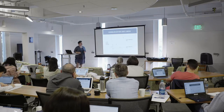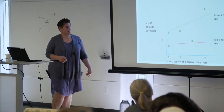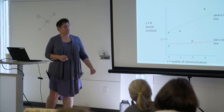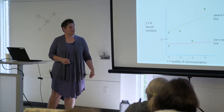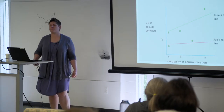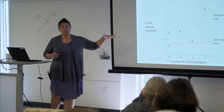Here's an example with Jane and Joe. You can see the random intercept difference — Joe has less sex on average, Jane has more. But what this is telling us is that in Joe's network, the quality of communication has no impact on how much sex he's having. For Jane, the quality of communication matters a lot for how much sex she's having with her partners. So we shouldn't constrain these lines to be parallel — we shouldn't constrain the slopes to be equal. We can do that by adding a random coefficient, allowing every level-two observation's slope to differ as well as its intercept.